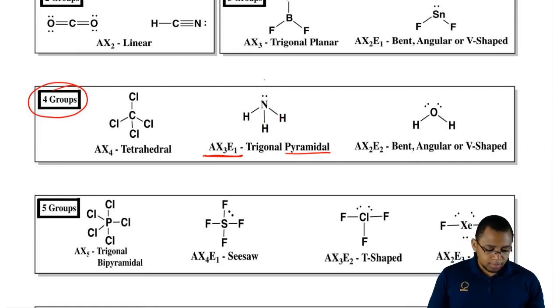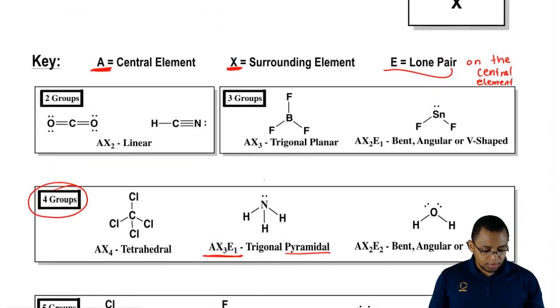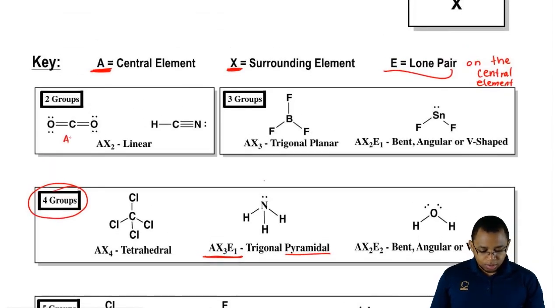Now, if we go through this, if you have two groups, here this is AX2, there's no lone pairs around the central element, same thing here.